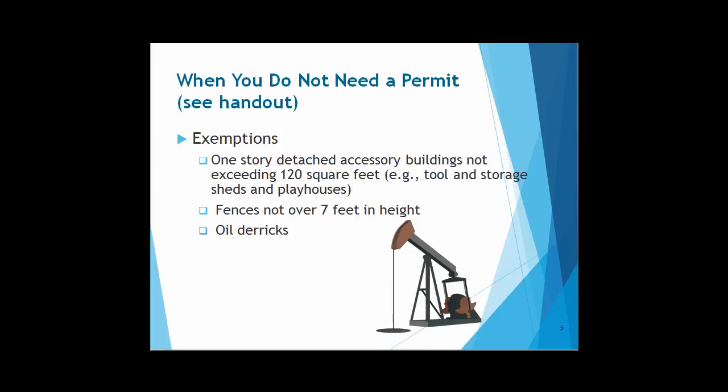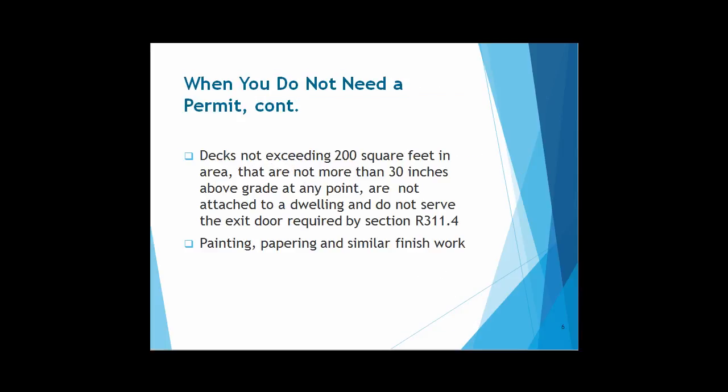The building code also has a list of exempt scopes of work that would not require a permit. One-story detached accessory buildings not exceeding 120 square feet, such as tool and storage sheds and playhouses. Fences that are not over 7 feet in height. Oil derricks — just in case you were thinking about installing one in your backyard — would not require a permit. Decks not exceeding 200 square feet in area, that are not more than 30 inches above grade at any point, are not attached to a dwelling and do not serve the exit door required by section R311.4.